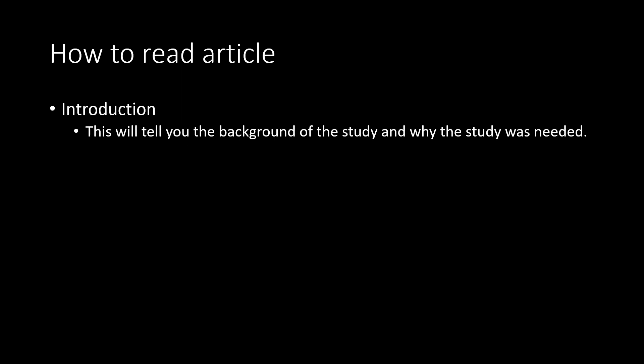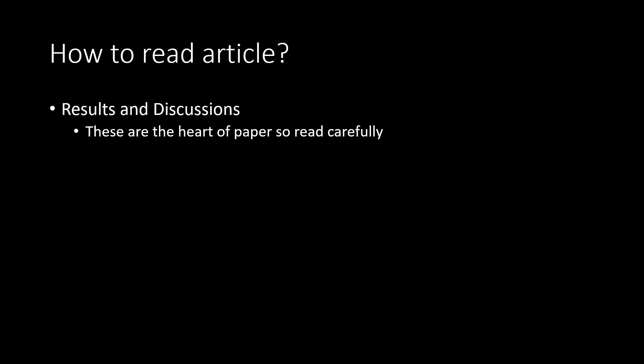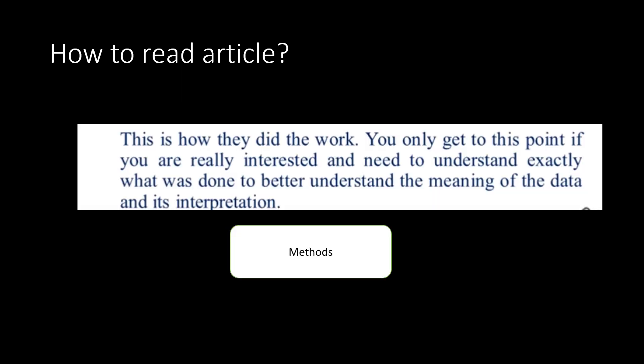The introduction tells you the background of the study and why it was needed. When you're writing, make sure your background section clearly explains why you conducted the particular study. Results and discussion are the heart of the paper — check whether the tables and diagrams were necessary, what statistics were used, and whether everything fits the picture. The discussion explains the rationale behind the findings. Methods are especially important for those writing papers, as they tell you whether you can replicate the experiment or adapt it for your own study.